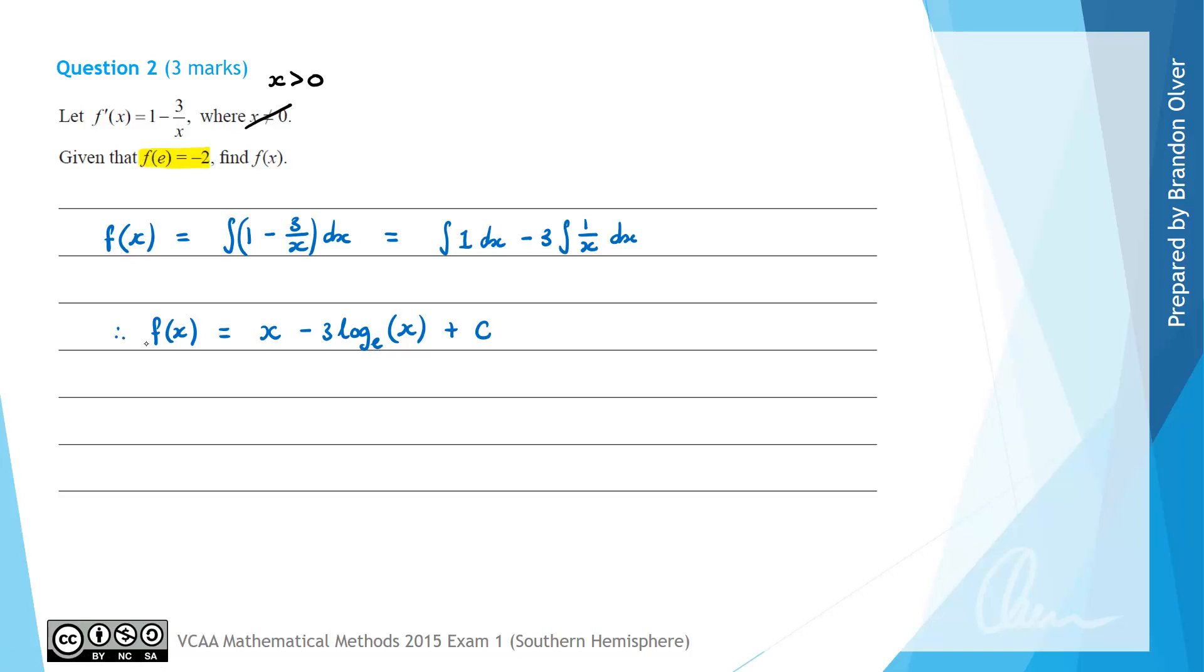Next we're going to use the information that f(e) = -2 to find that value of c. So we know that f(e) would give e - 3 times log_e(e) + c and that is equal to -2. And now log_e(e) is simply 1. So therefore this line gives e - 3 + c = -2.